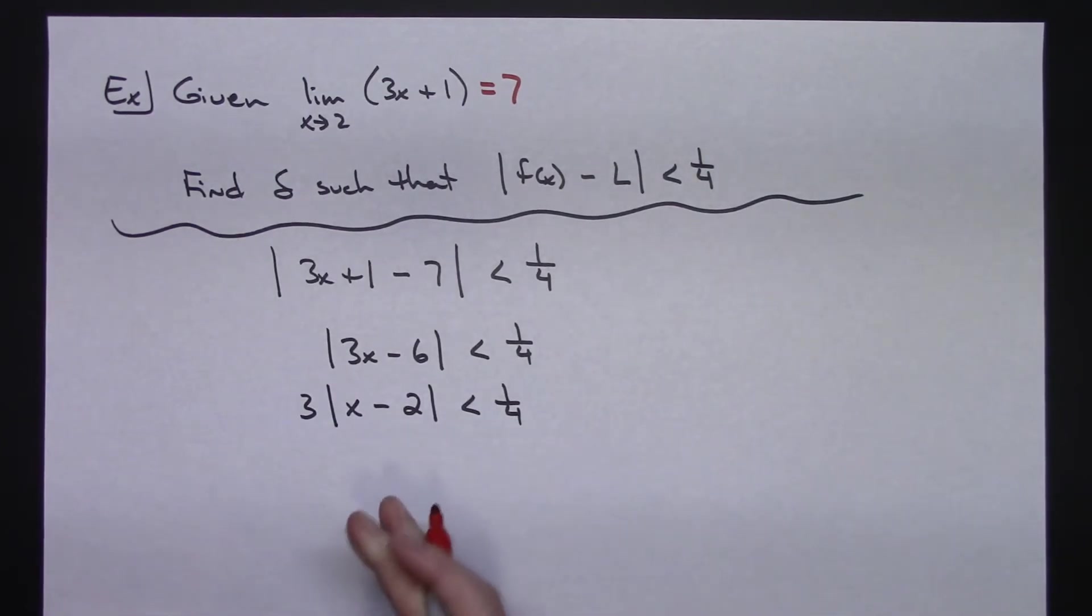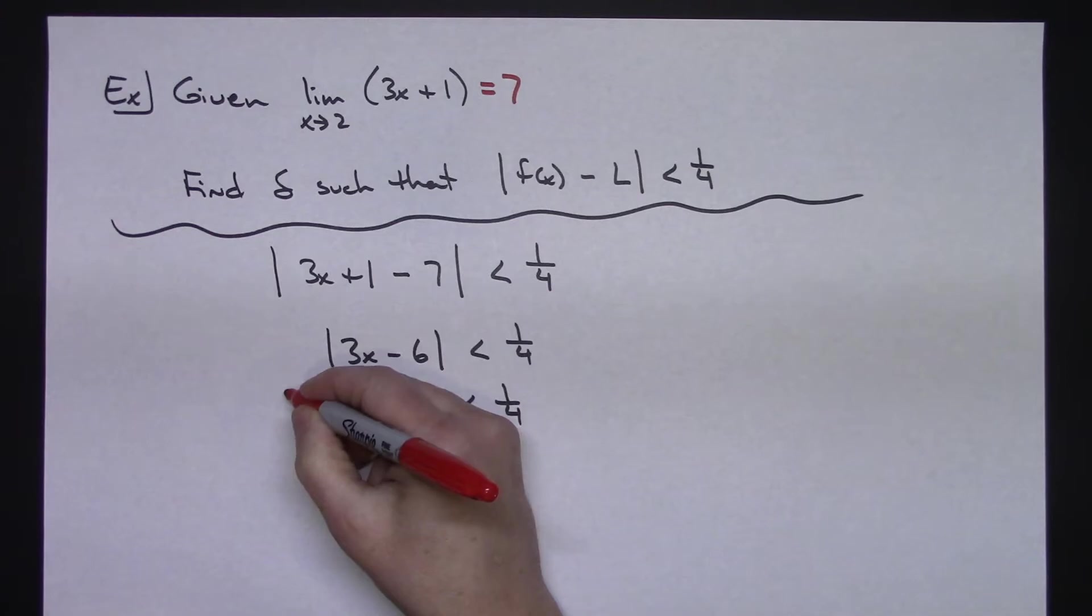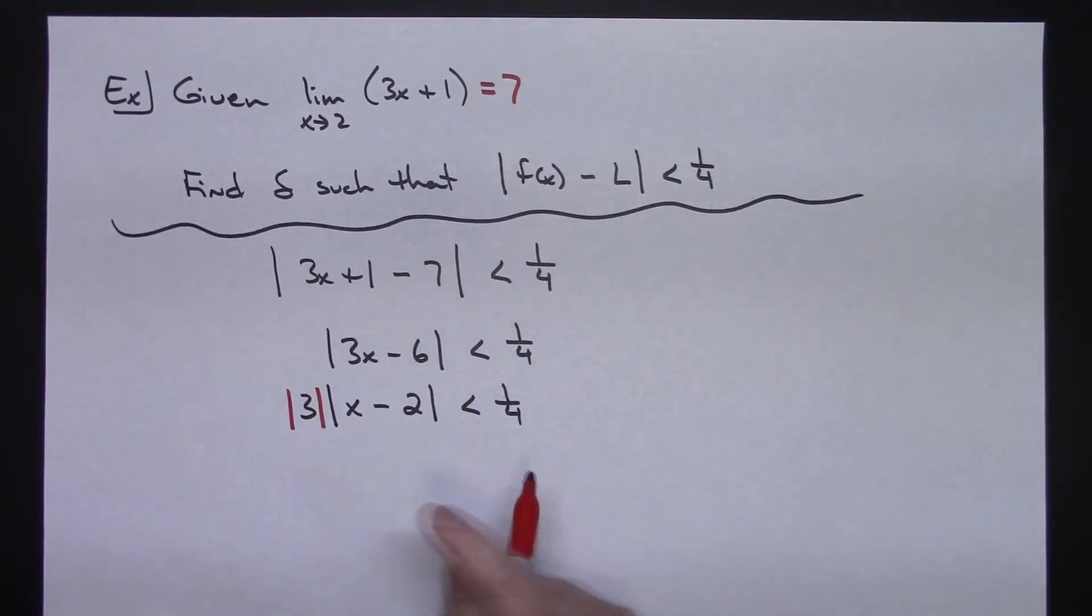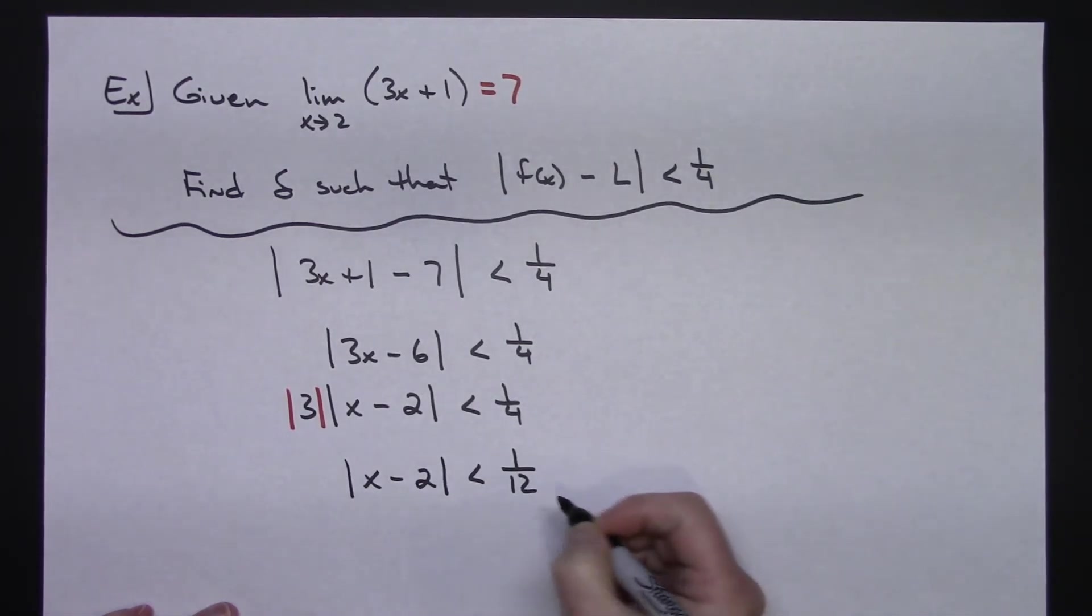And then, like I said, sometimes you'll see it just pulled out, it's a positive 3. So we know it's going to be positive. Some books or work or notation will show absolute values around that. If you pull out negative, then you would need those absolute value bars around that to make that positive. But since it was a 3, we're good there. Now, I'm going to go ahead and continue to solve this. So I'm going to divide both sides by 3, positive 3. So then I'm going to have the absolute value of x minus 2 is less than 1 12th.